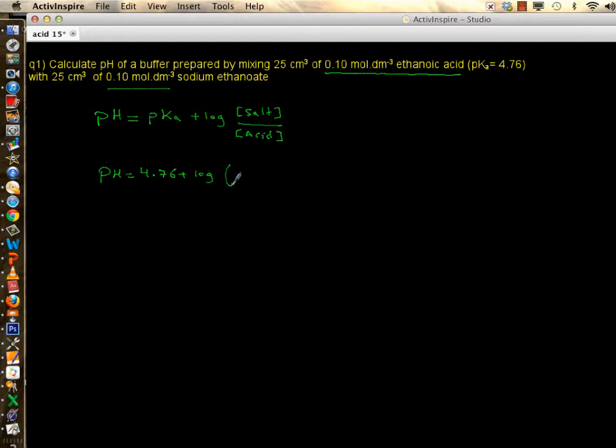Now put in your calculator. Let's just put the same numbers over each other, so 0.1 and 0.1. That's log of one, and log of one is simply zero. So pH equals pKa and it's equal to 4.76. And this is how you should prepare buffer of desired pH.